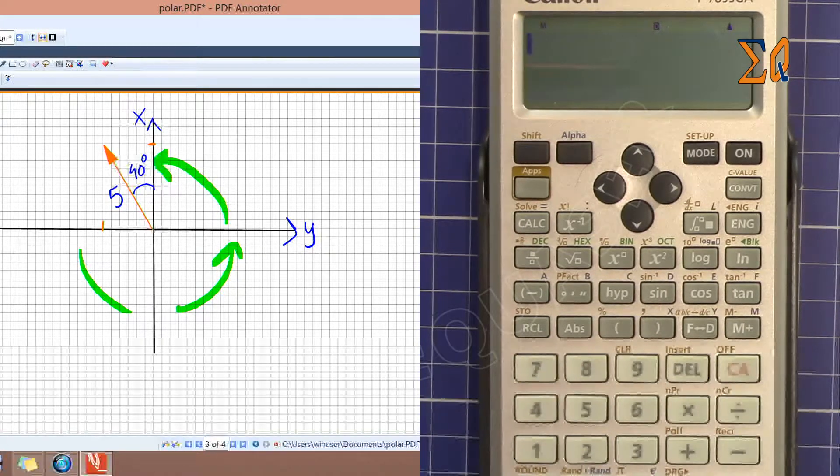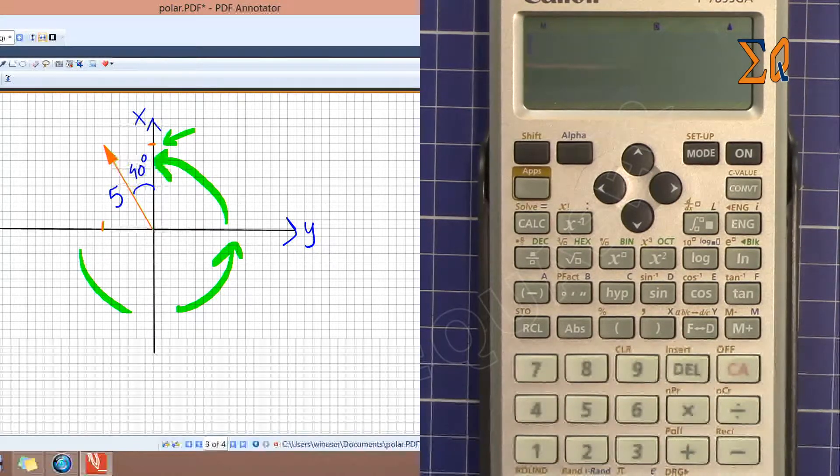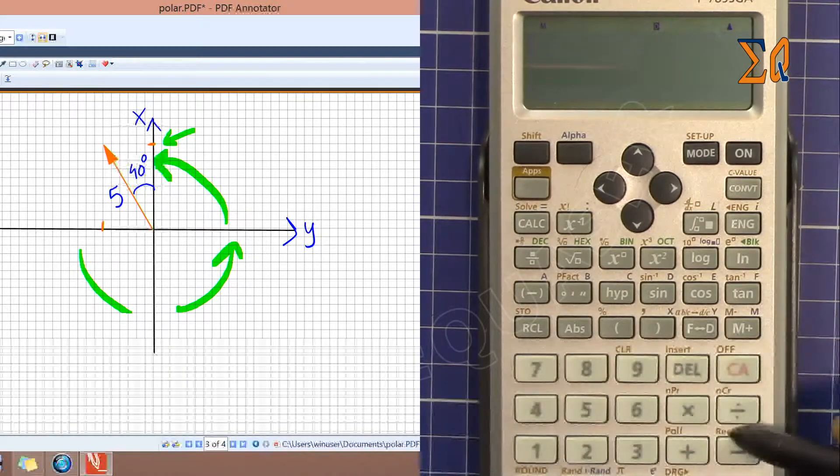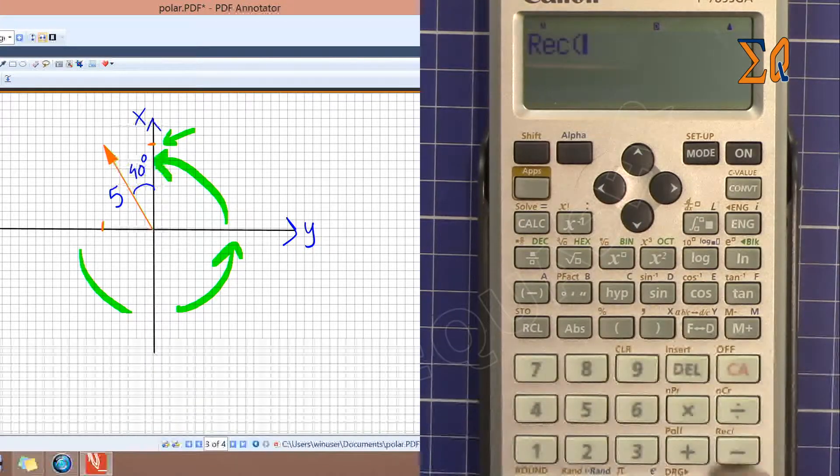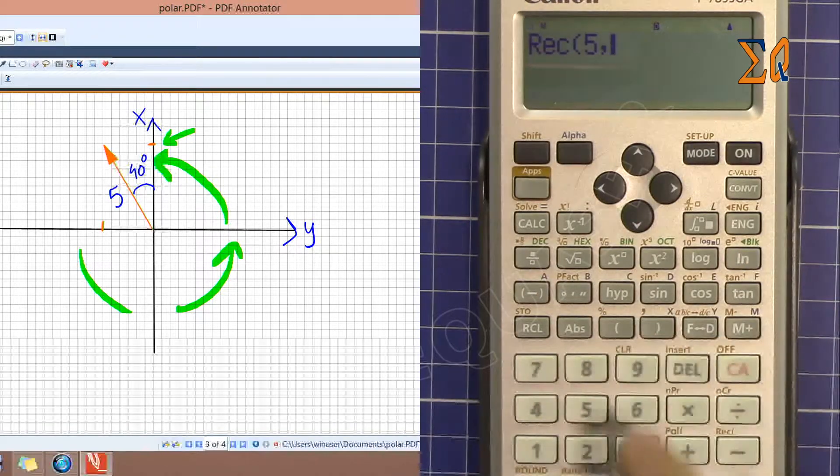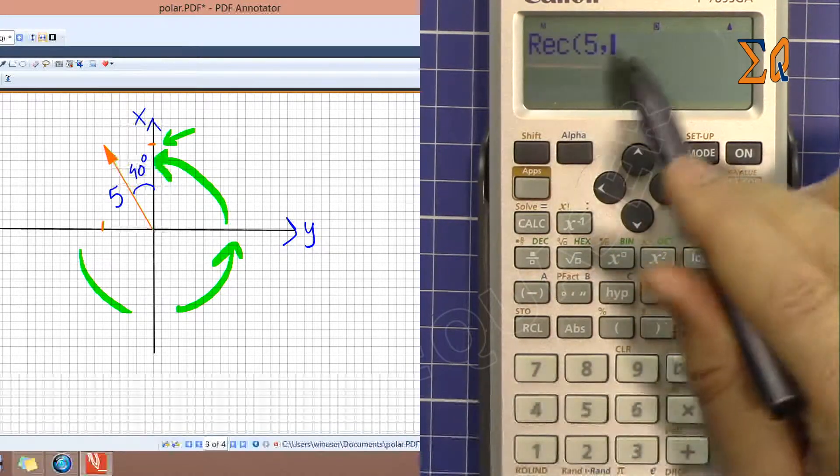Let's find here now the X and Y because we have polar, we have R and we have theta, but we want to find a rectangular value of X and Y. So for the rectangular when pressing shift and this time rectangle, now it asks for r first, put r, and then shift comma, and then the theta. So r is first and then theta.